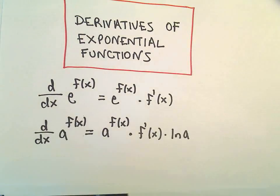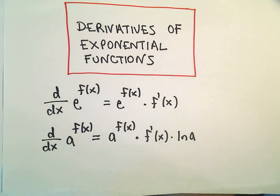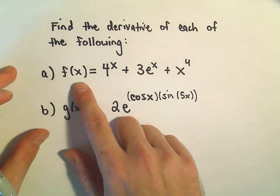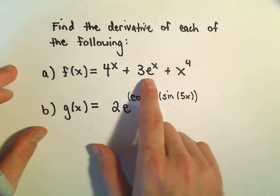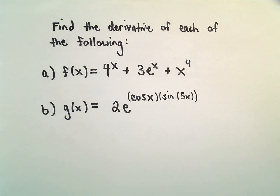Alright, just a couple examples here. I think we can do both of these examples in this video. So we're going to find the derivative, first off, of 4 to the x plus 3e to the x plus x to the 4th.